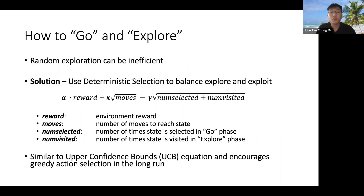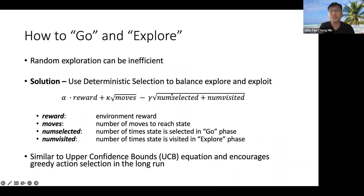However, using random exploration may be inefficient, so we propose to use a more deterministic equation to balance between Explore and Exploit. This balances between the reward that an agent gets as well as exploration, where we select states that are not visited as often more. We also prioritize states with a greater number of moves, which means they have a higher chance of being at the exploration frontier.